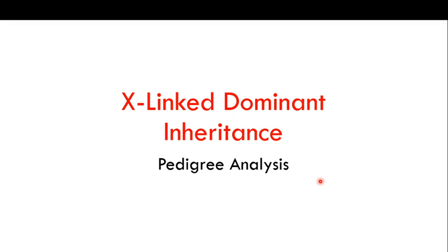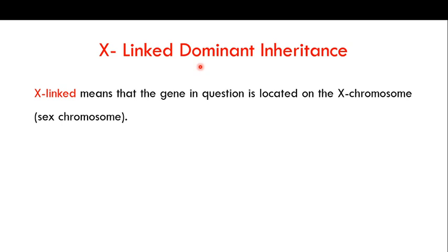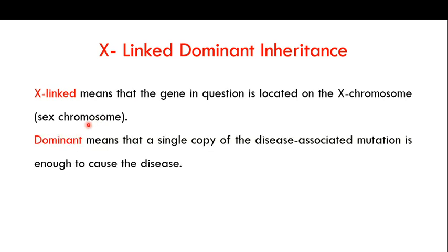In this video I want to focus on X-linked dominant inheritance and their pedigree analysis. The term X-linked means that the gene responsible for a particular genetic disease is located on the X chromosome — one of the sex chromosomes. The term dominant means that a single copy of the disease-associated mutation is enough to cause the disease.